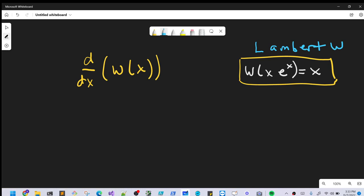Okay, so what I want to do today is find the derivative of the Lambert W function. Let's get started. We'll approach it the way we would with any inverse function, which is using implicit differentiation.